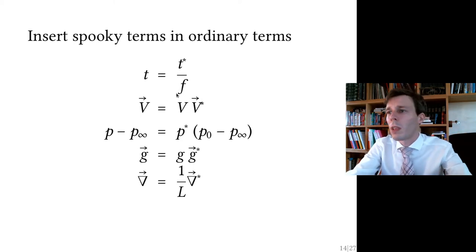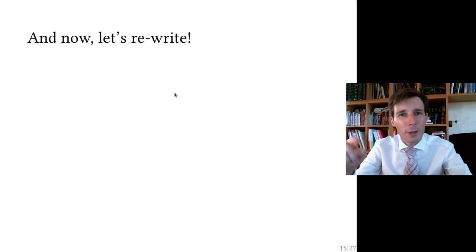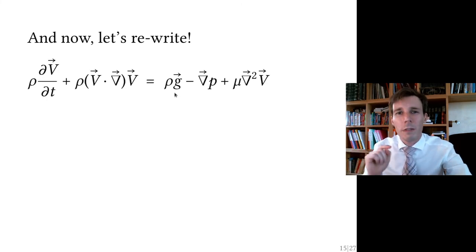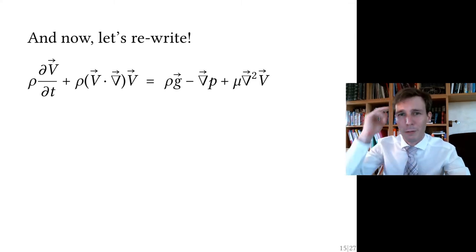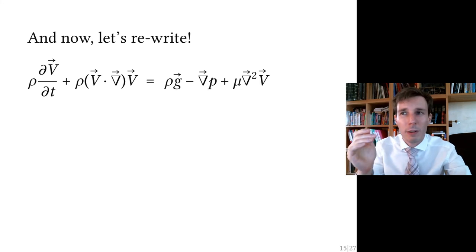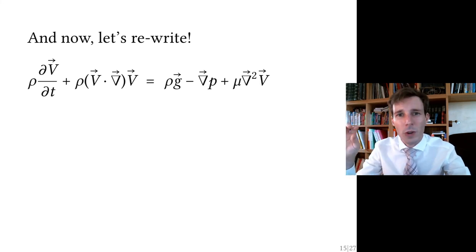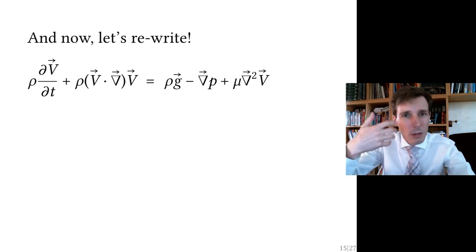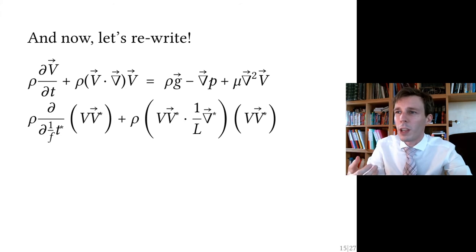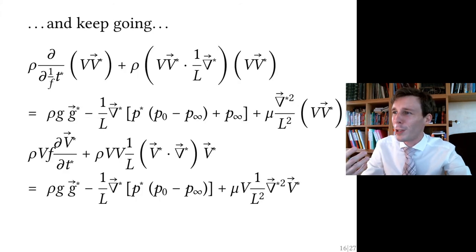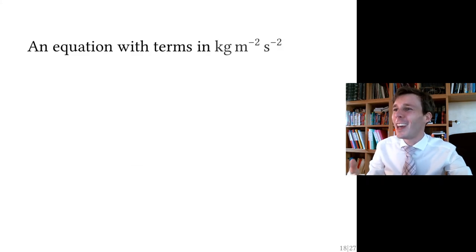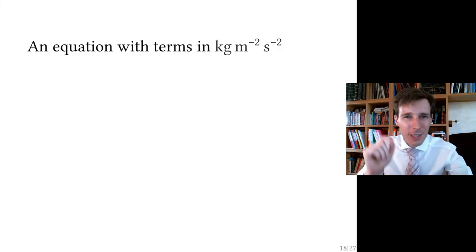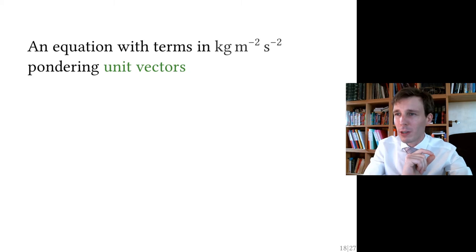We put these non-dimensional substitutions into the Navier-Stokes equation. You can work through the algebra in the notes, but the principle here is important: we have an equation with scalar terms that have physical values, and those terms are in front of unit vectors.